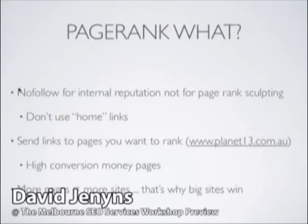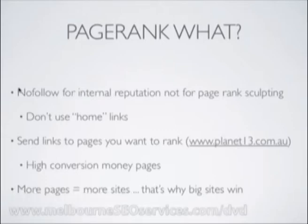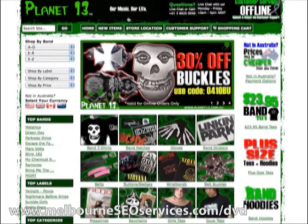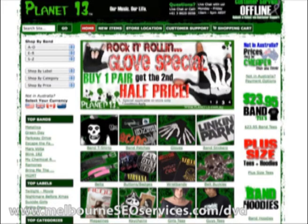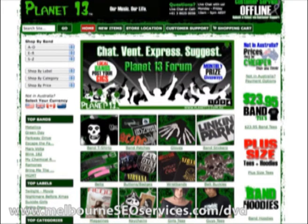The only time you may consider using PageRank optimization is when you're really trying to get the absolute most out of your site — optimizing for internal reputation. This is when you're linking within your website. Most people link to their home page with the anchor text 'home,' so I'm going to head over to Planet 13, a website I've helped build and manage. You can see we've got a home link at the top here.